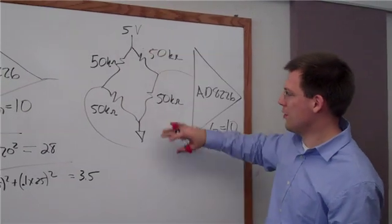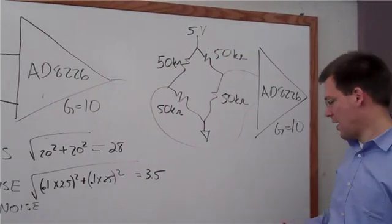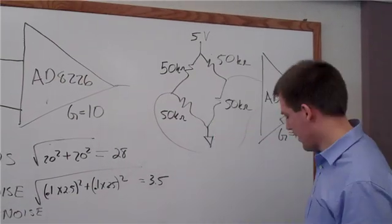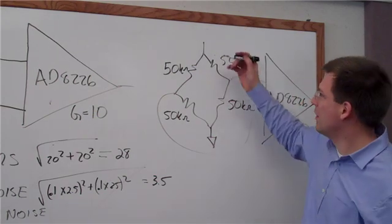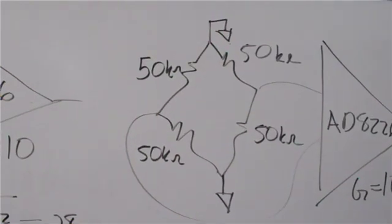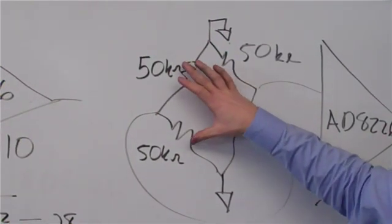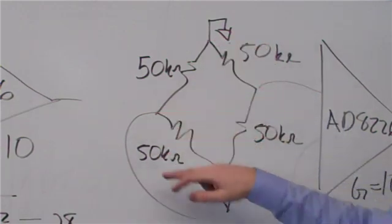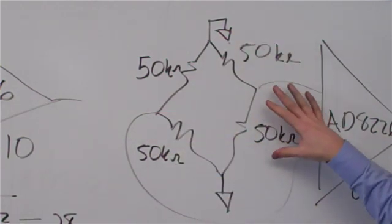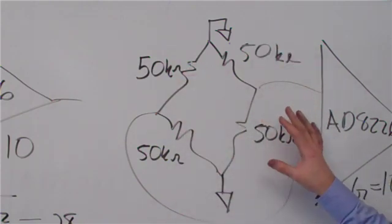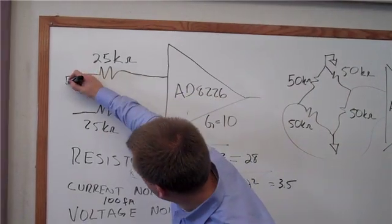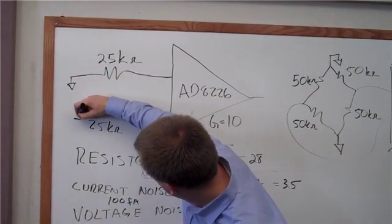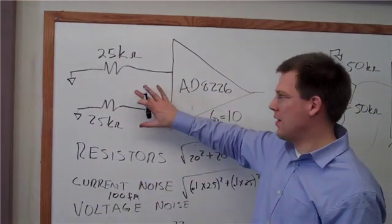You'll notice I've started with 5 volts and ground on the bridge, but when we do a noise analysis, we can turn any independent voltage sources into a ground. So I'm going to turn that from 5 volts and make that ground. Now I have these two resistors in parallel, so I've connected ground to this input. Two 50K resistors in parallel equals 25 kilo ohms. So we can go from this type of circuit to this circuit over here.